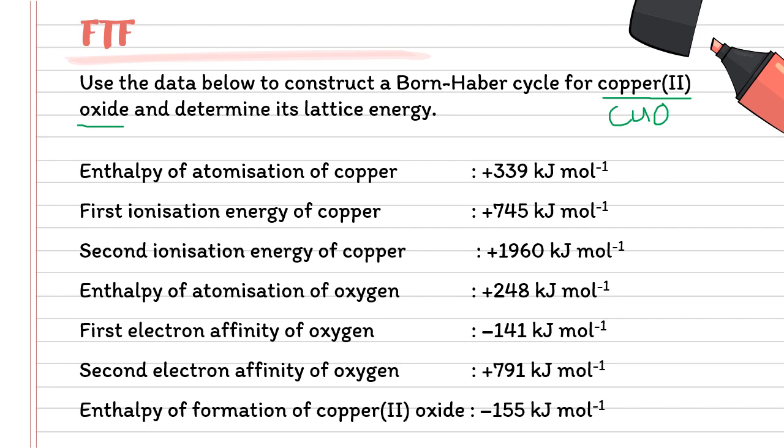But if you look at the information given here, you are not given thermochemical equations. Instead, you are given only the name of the enthalpy. So your work is to make your own thermochemical equation based on the definitions given. Before we write the thermochemical equations, we need to first rearrange the order. We'll start with enthalpy of formation, followed by atomization of copper, then atomization of oxygen.